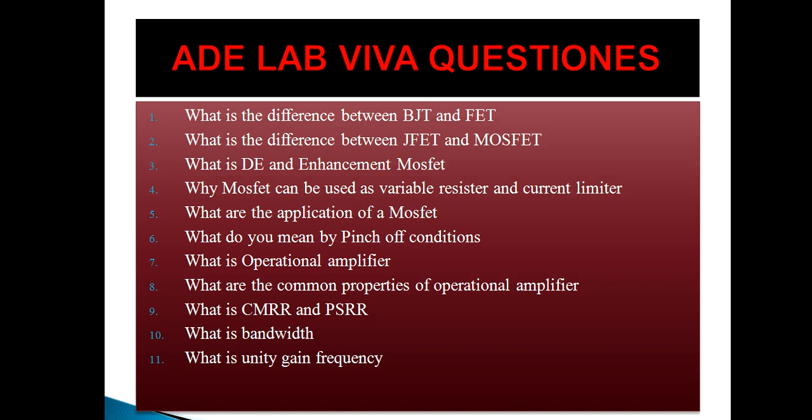Why can a MOSFET be used as a variable resistor and current limiter? Looking at the MOSFET output characteristics, the characteristics vary for different values of VGS — VGS0, VGS1, VGS2, VGS3 — each having a different slope. Slope is inversely proportional to resistance, which is why it can provide a variable resistance. Also, when you vary VGS and VDS, after a certain value of VDS called the pinch-off voltage, the current saturates and will not increase further.